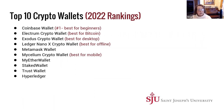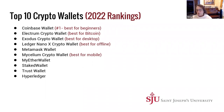Among the top cryptocurrency wallets, Coinbase has been ranked number one overall and is noted as best for beginners. Electrum is best for Bitcoin, Exodus is best for desktop, Ledger Nano X is best for online usage, and Mycelium is best for mobile. MetaMask, though not ranked as high, is a very popular and easy-to-use wallet for people just getting started.